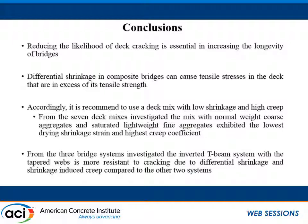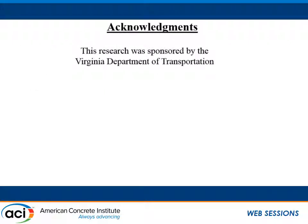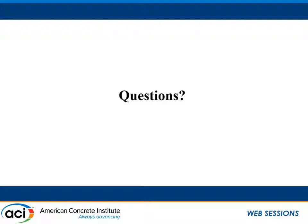In conclusion: reducing the likelihood of deck cracking is essential in increasing the longevity of bridges. Differential shrinkage in composite bridges can cause tensile stresses in the deck that exceed the tensile strength of the concrete. Accordingly, it is recommended that a deck mix with low shrinkage and high creep be used — in this study, that mix was the one with normal weight coarse aggregates and saturated lightweight fine aggregates. Of the three bridge systems investigated, the inverted T-beam system with tapered webs is most resistant to cracking due to time-dependent effects. This study was sponsored by the Virginia Department of Transportation.